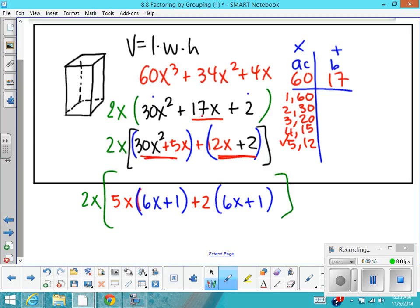I'm going to copy down my GCF from originally, and then I've got my 5x + 2 and my 6x + 1. So if you prefer that method, you could try using it for trinomials as well.